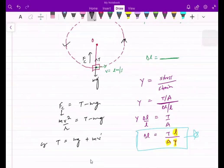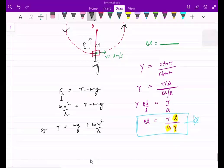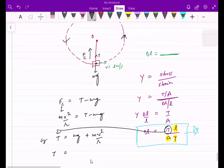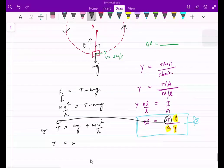So T minus mg equals mv square by r. What should we want? T equals mg plus mv square by r.